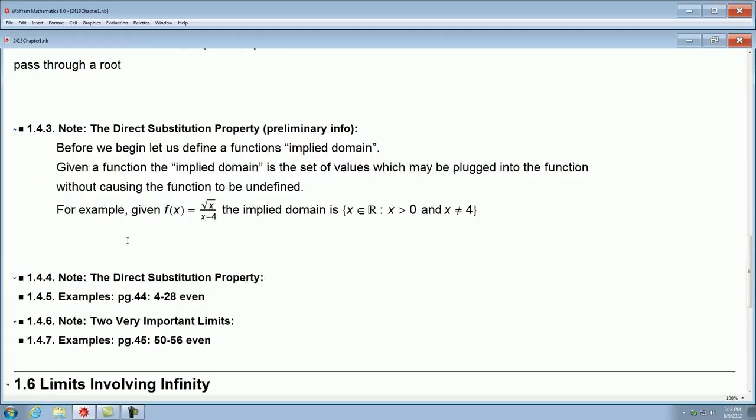We also have what's called the direct substitution property. So before I actually go into this, I need to tell you a couple of things. Something about what's called the implied domain of a function. If somebody gives you a function, the implied domain is the set of values which may be plugged into the function without causing the function to be undefined.